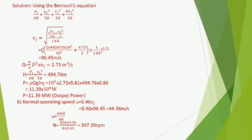Using Bernoulli's equation: p1/(ρg) + v1²/(2g) = v2²/(2g) + k·v2²/(2g). We need v2 to find flow rate Q. Therefore v2 = √(2(p1/ρg + v1²/2) / (1 + k)). Substituting values, the jet velocity vj = 96.45 m/s.